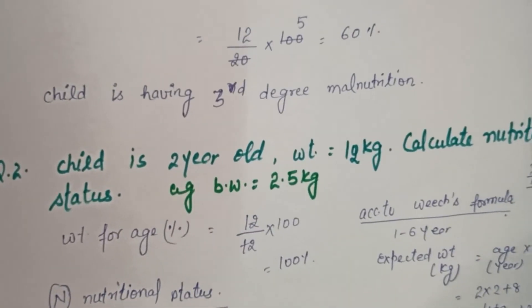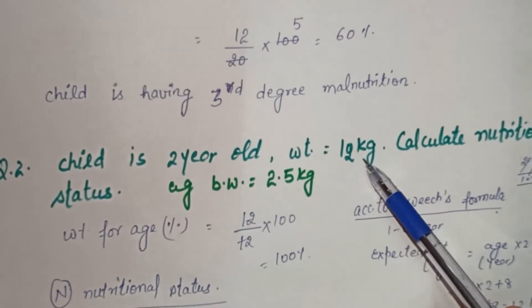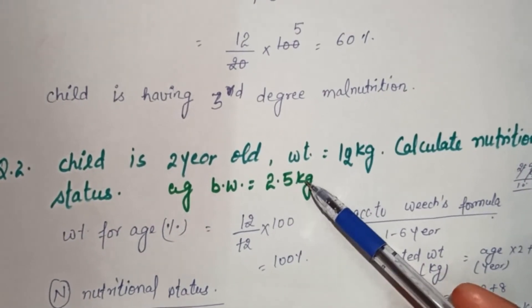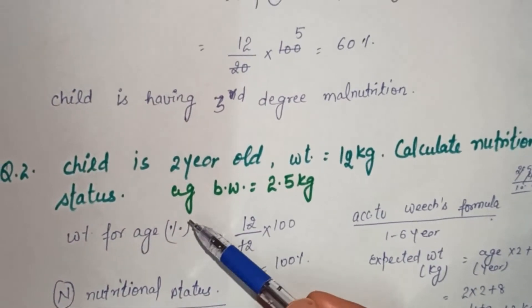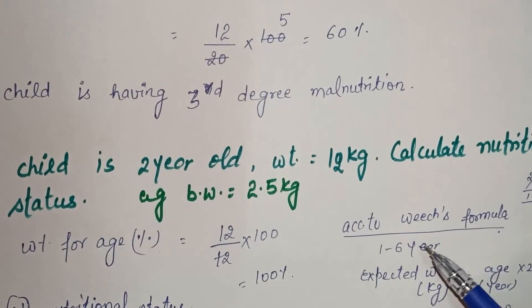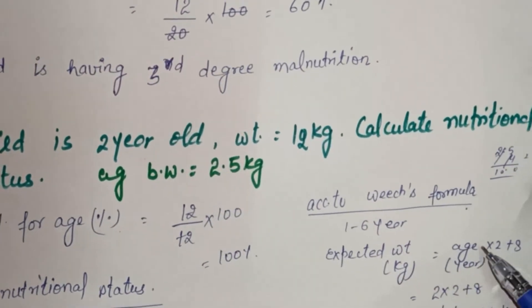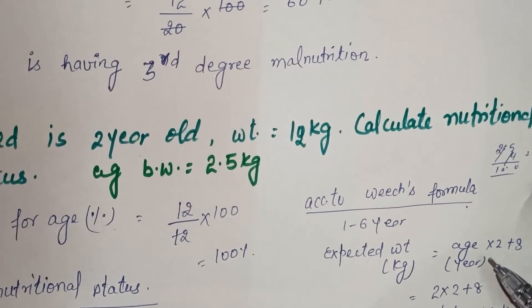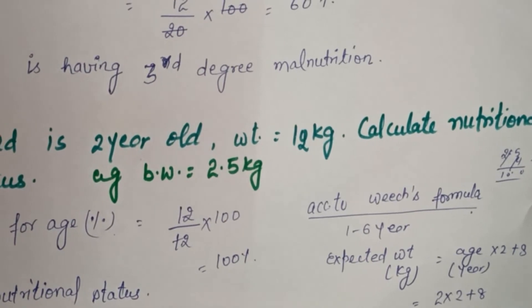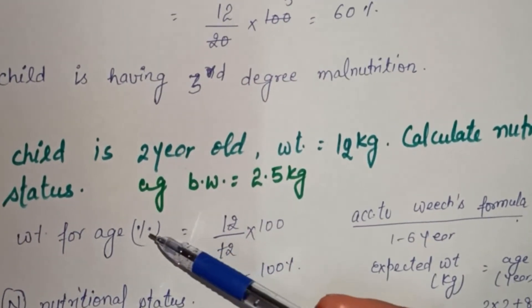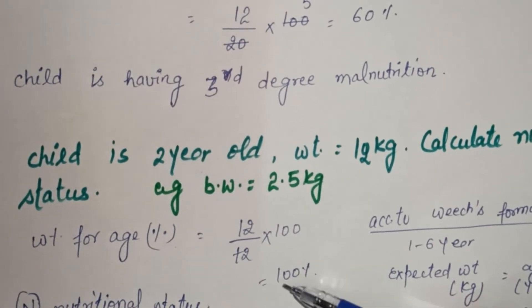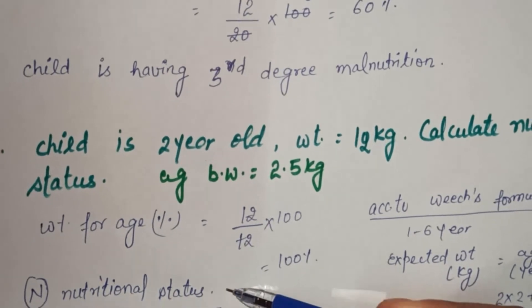One more example: a child is two years old and weighs 12 kg. Using the formula for 1 to 6 years — expected weight in kg equals age in years multiplied by 2 plus 8 — a two-year-old's expected weight is 2×2+8 = 12 kg. So weight-for-age percentage is 12 divided by 12 into 100, which equals 100 percent — normal nutritional status. The child is healthy.